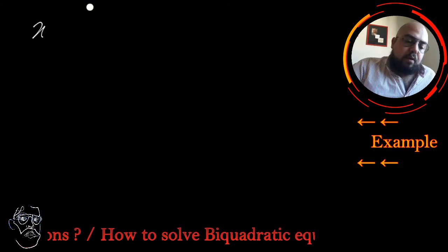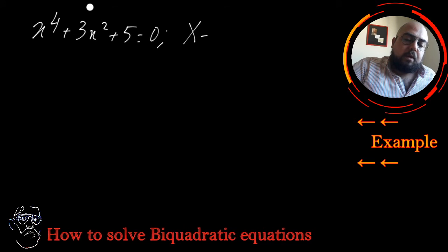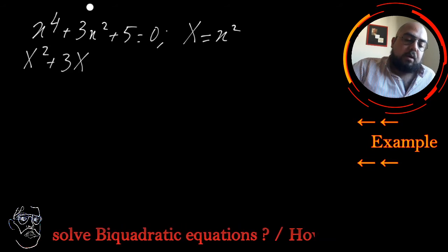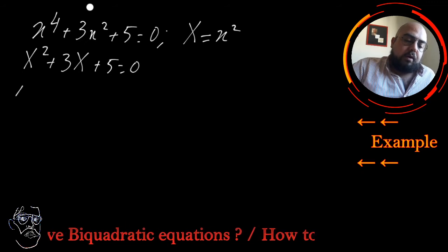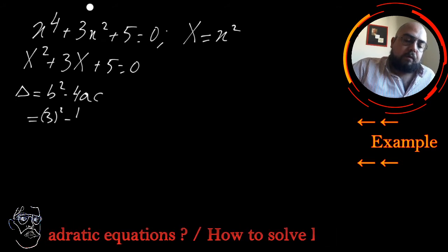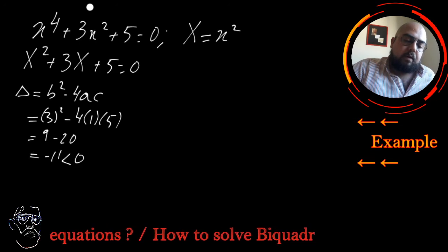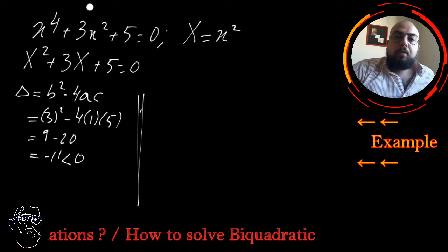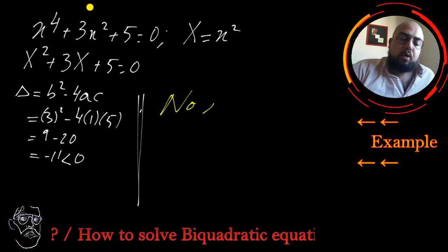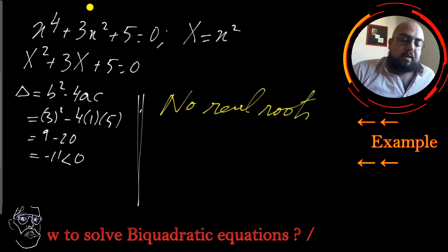The next example is x⁴ + 3x² + 5 = 0. Again, let capital X = x², so you obtain X² + 3X + 5 = 0. You calculate delta: b² - 4ac = 3² - 4 × 1 × 5 = 9 - 20 = -11, which is negative. Just like the normal case of a quadratic equation, you simply say that this bi-quadratic equation has no real roots.